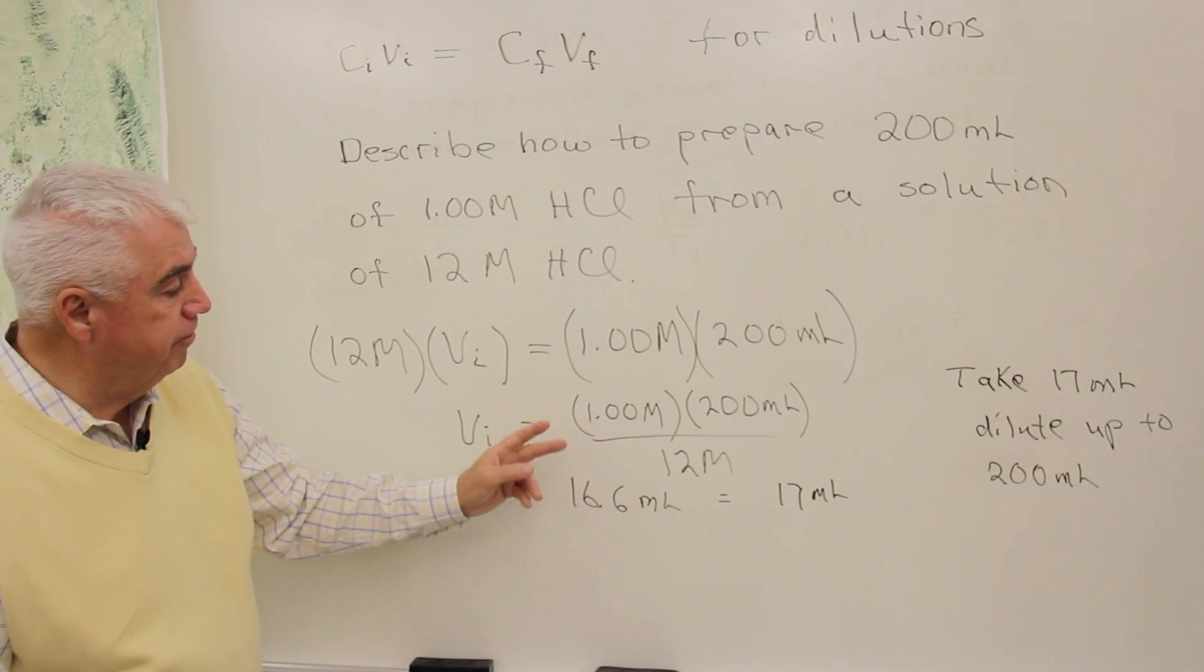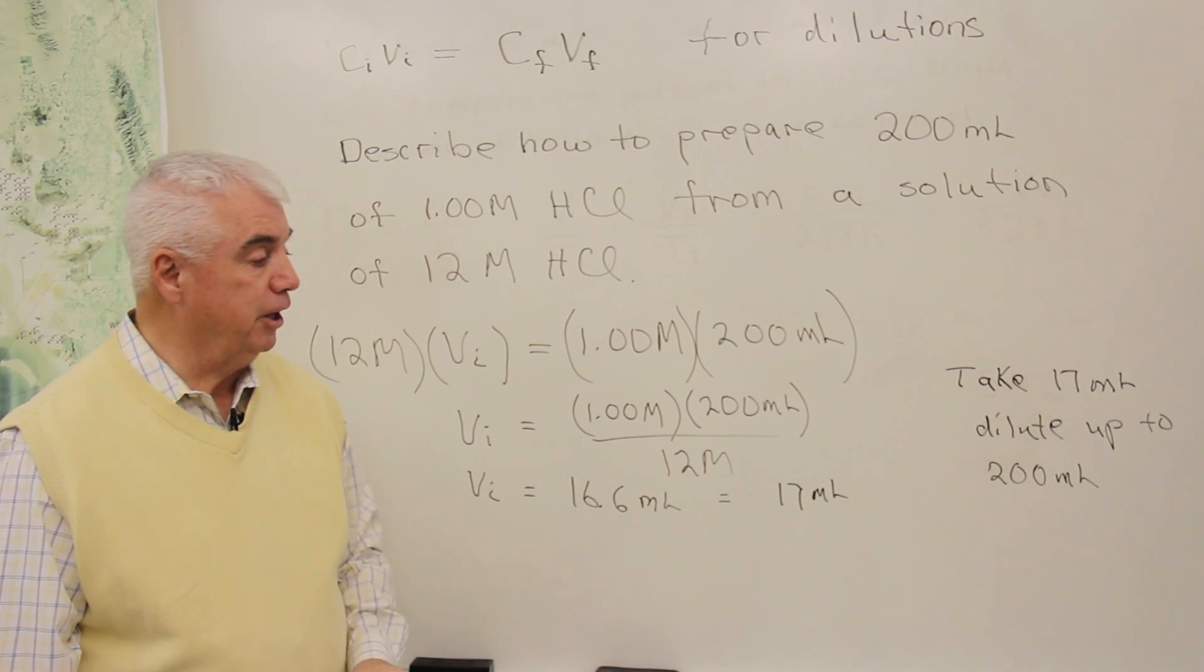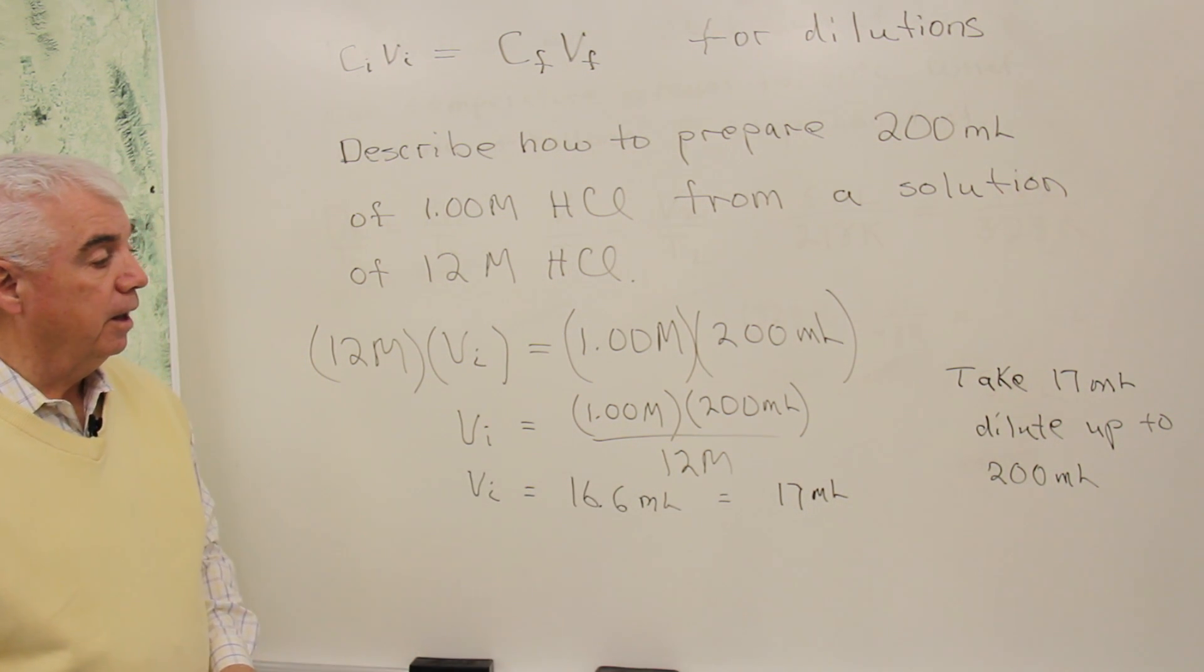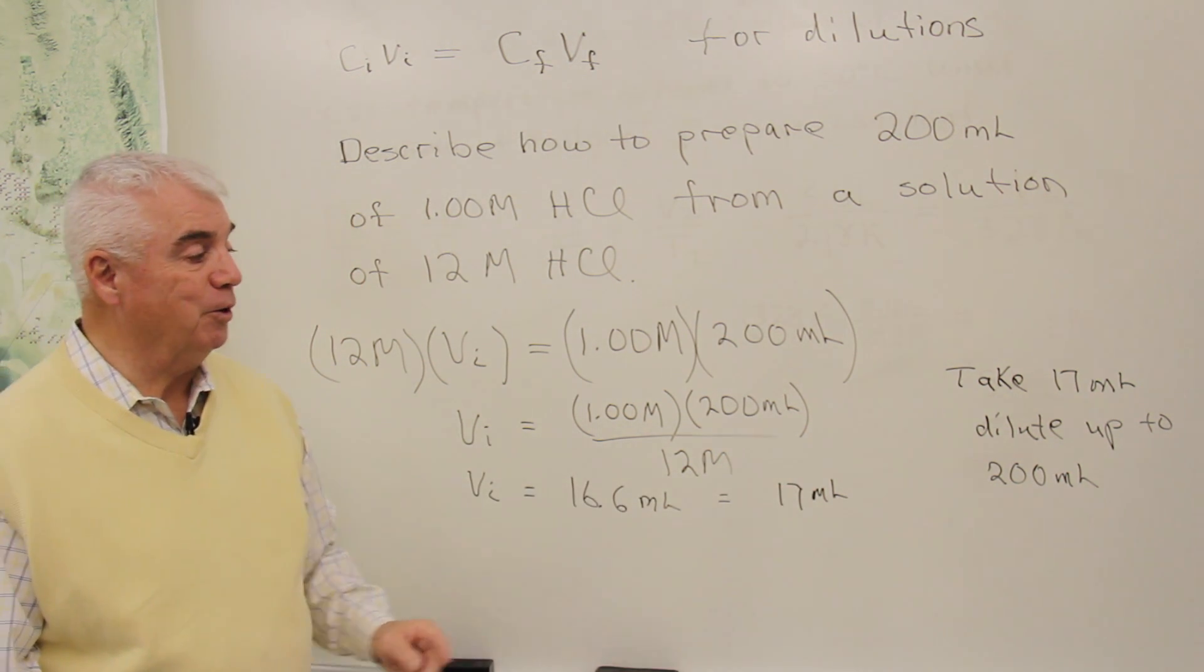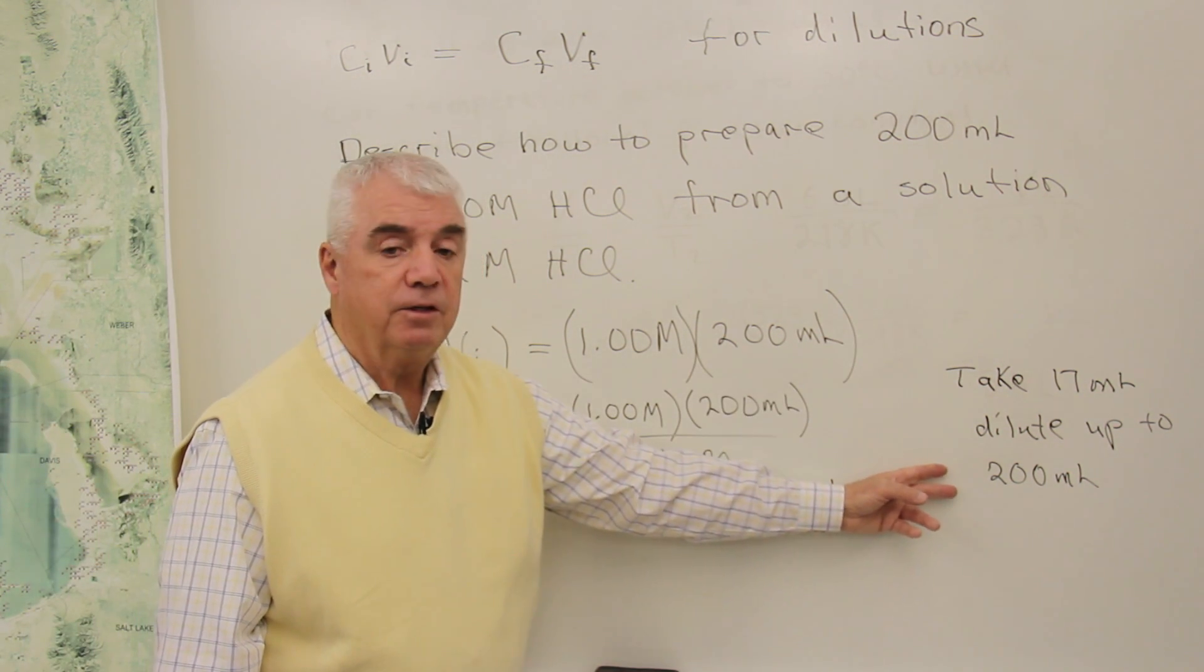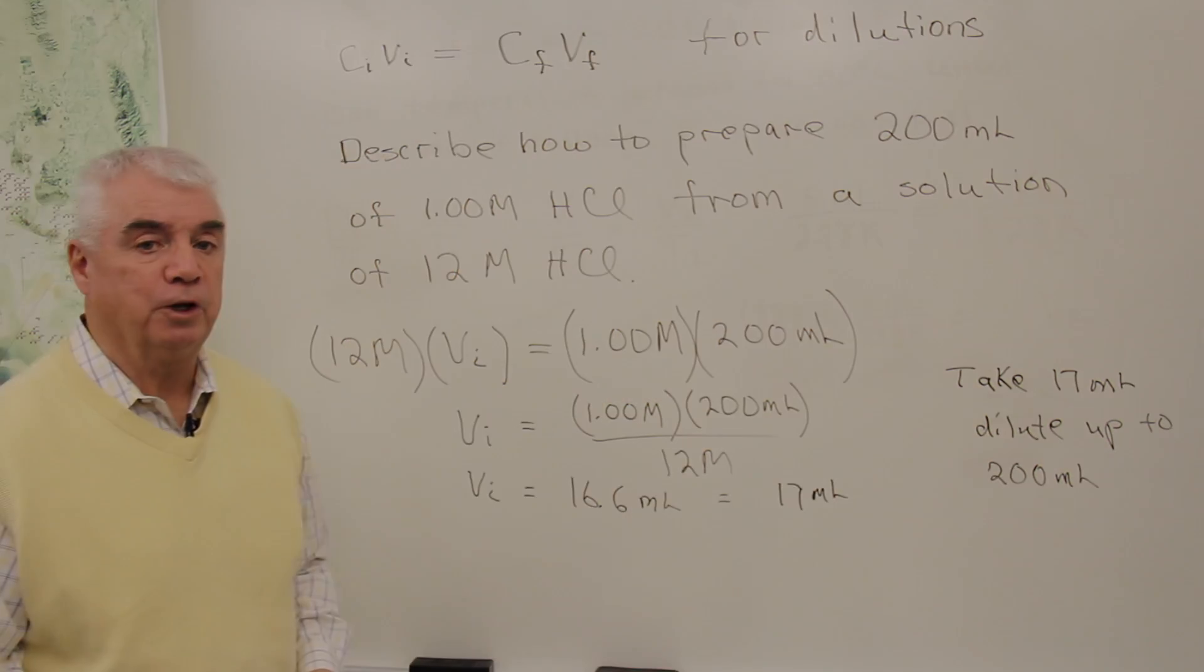With two significant figures right here, we need two significant figures in the answer. And with that 17 milliliters then, what we do is dilute up to a final volume of 200 milliliters, and we'd have the desired solution.